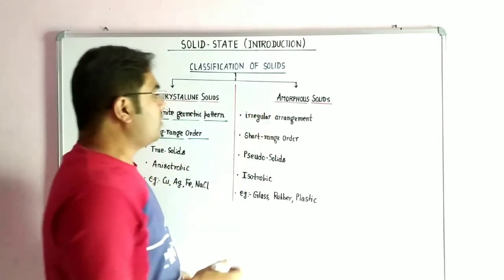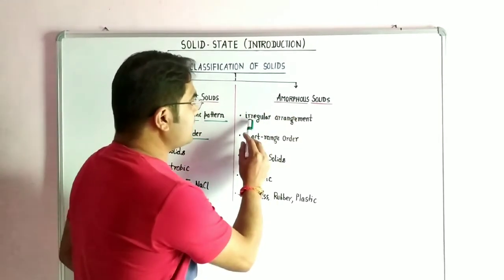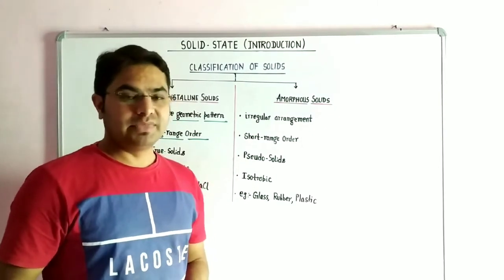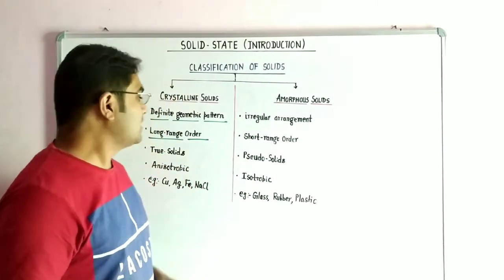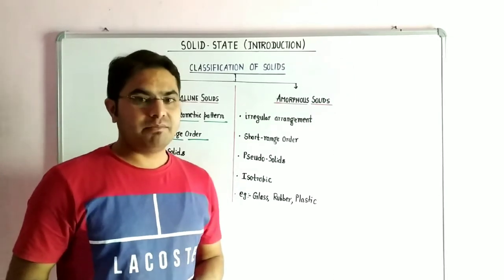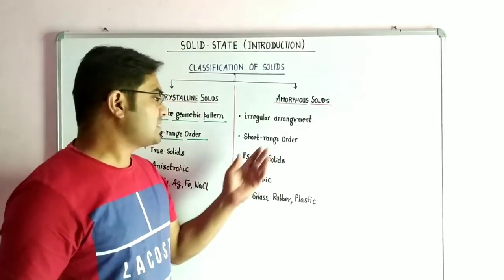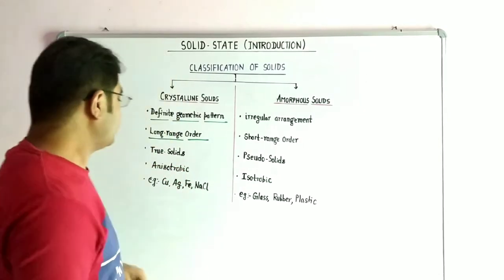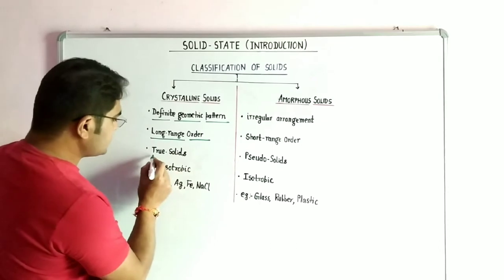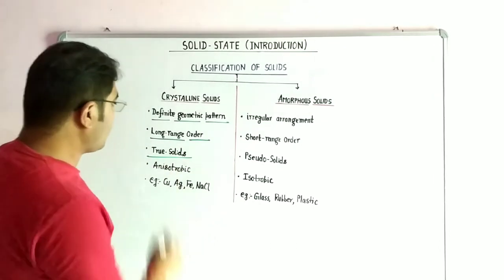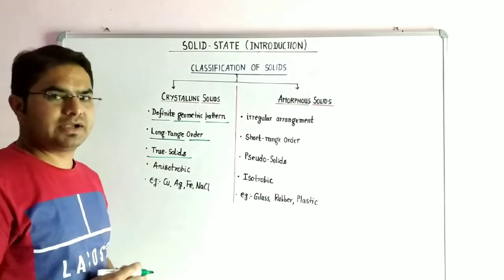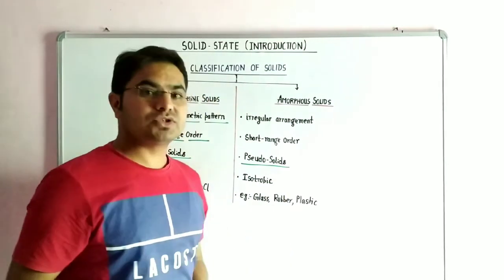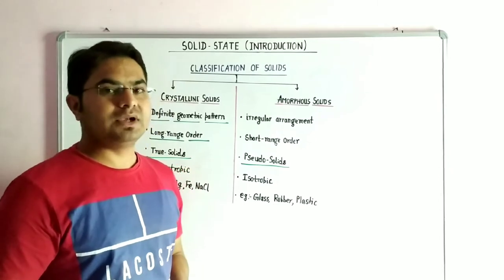On the other hand, amorphous solids are irregular in arrangement and they are short range order, means in initial stage they exhibit a simple geometric pattern, but after some time they become irregular in nature. Crystalline solids are true solids because they have definite geometric pattern, and amorphous solids are known as pseudo solids or supercooled liquids.